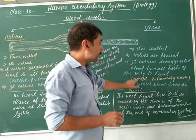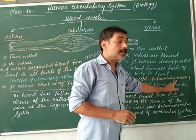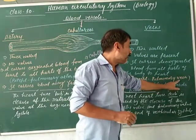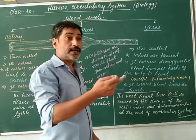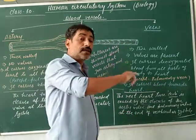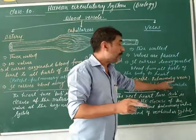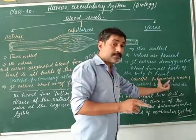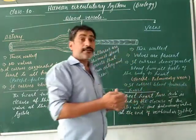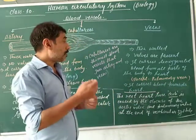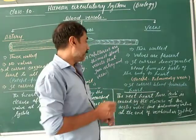For example, pulmonary vein. Pulmonary vein is the vein which carries deoxygenated blood from the lungs to the heart.